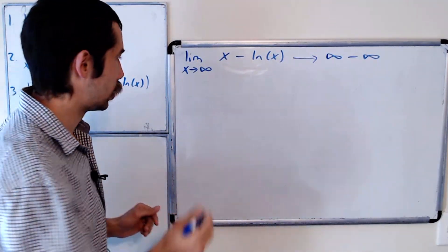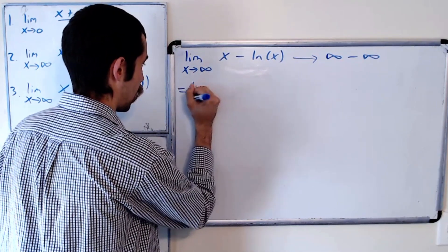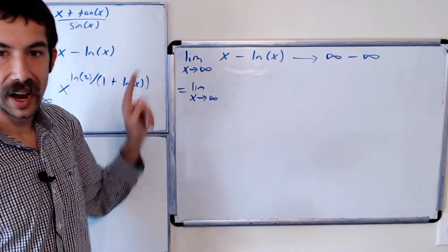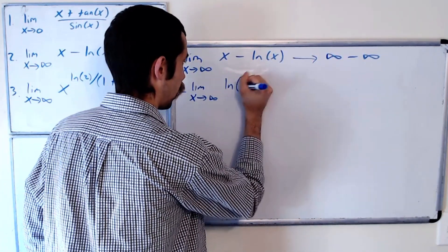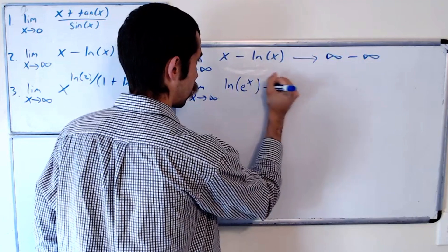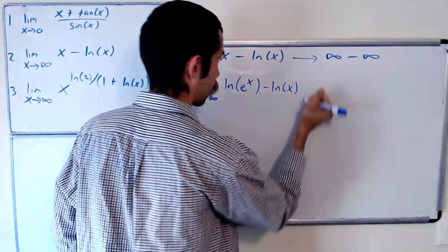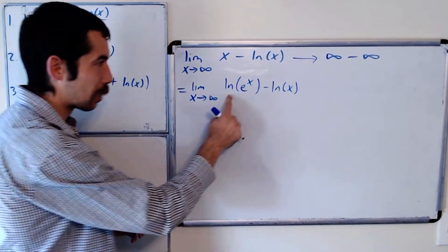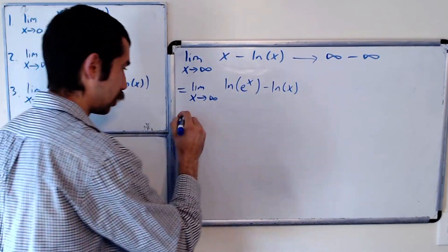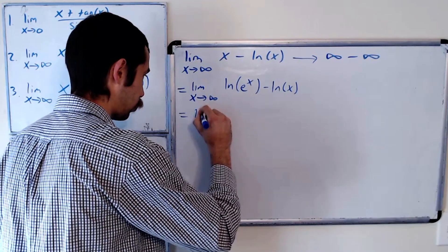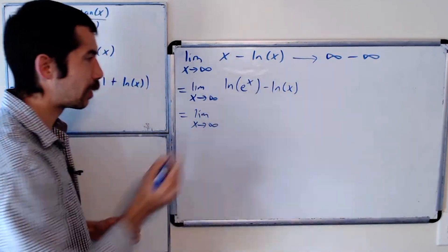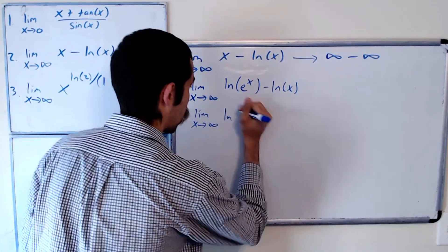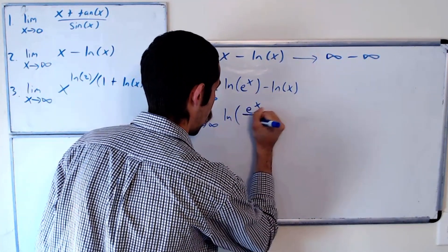What we're going to do — this is still the limit as x goes to infinity — we could rewrite x as the natural log of e to the x. Then the natural log of x stays the same. And now we combine these together using log laws. So this is the natural log of e to the x over x.